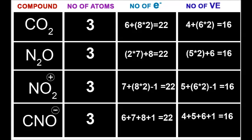Similarly, we can calculate the total valence electrons. The total valence electrons for CO2, N2O, NO2 plus, and CNO minus are all 16. So all of them have the same number of atoms, same number of total electrons, and same number of valence electrons. These are all isosterous.